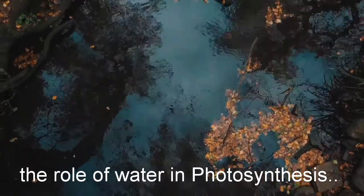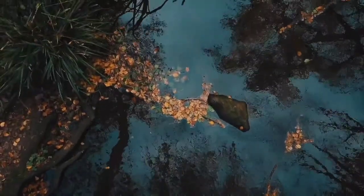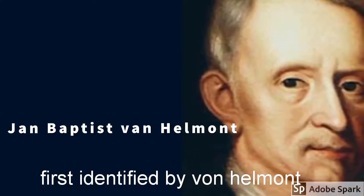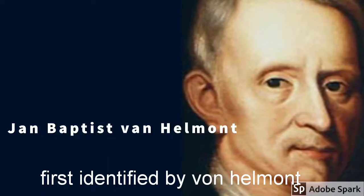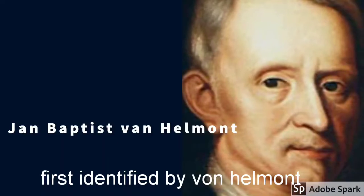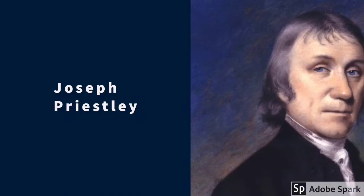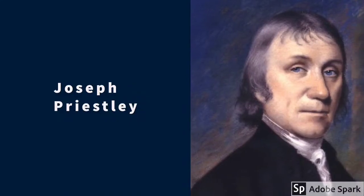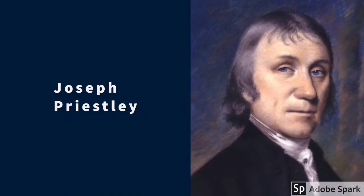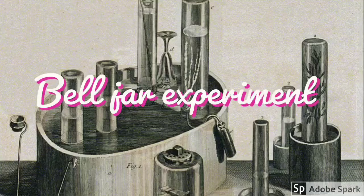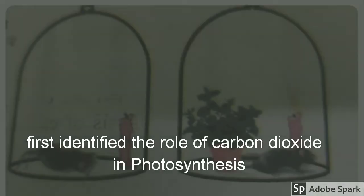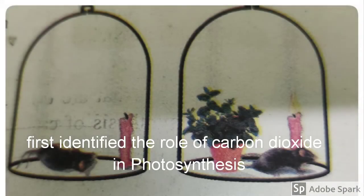The role of water in photosynthesis was first identified by Van Helmont through his willow plant experiment. Joseph Priestley, in the 1770s through his bell jar experiment, first identified the role of carbon dioxide in photosynthesis.